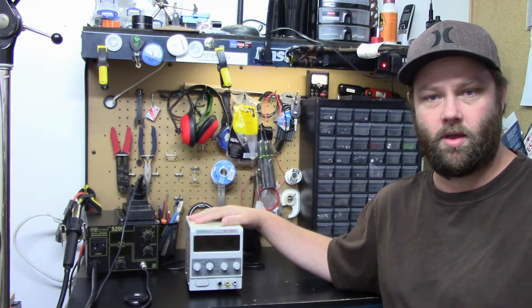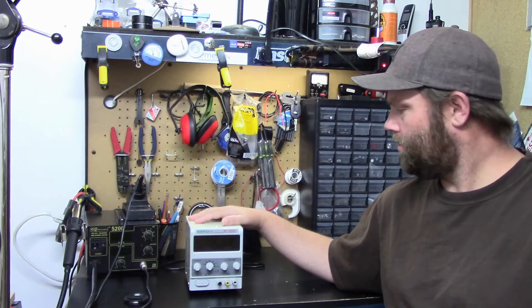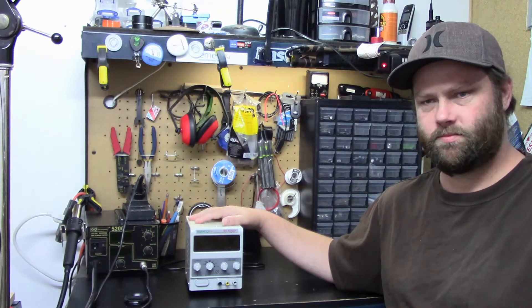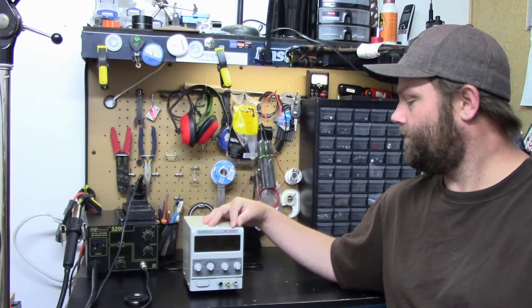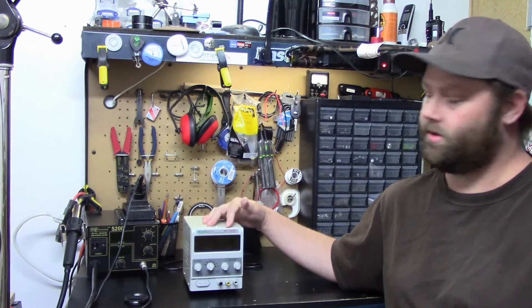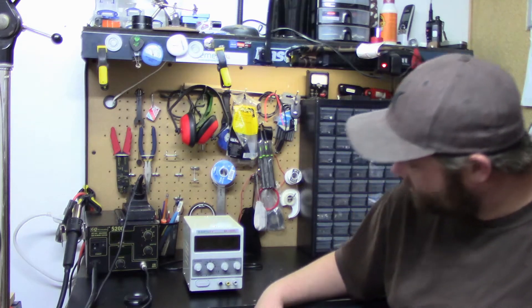Today we are going to be looking at the BAKUBE BK1502D+. This unit is a sophisticated digital DC power supply. It's 15 volts, 2 amps.